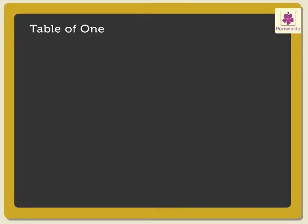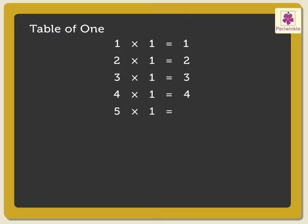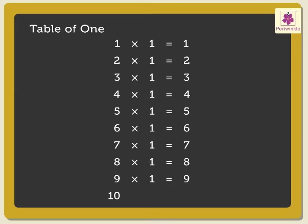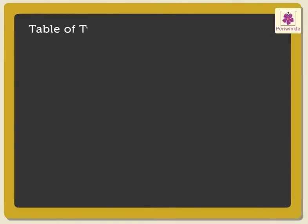The table of 1. 1 one is 1. 2 ones are 2. 3 ones are 3. 4 ones are 4. 5 ones are 5. 6 ones are 6. 7 ones are 7. 8 ones are 8. 9 ones are 9. 10 ones are 10.